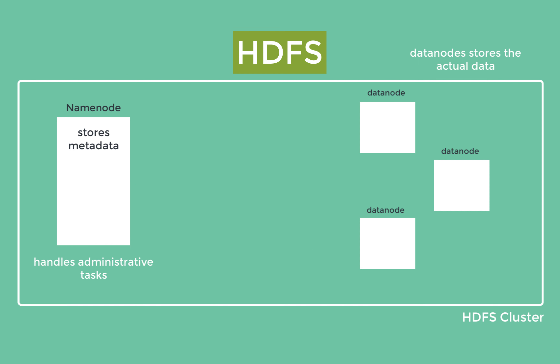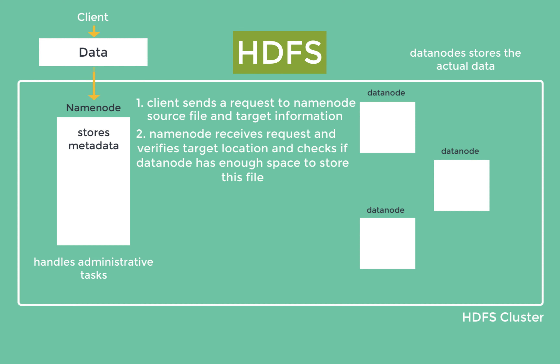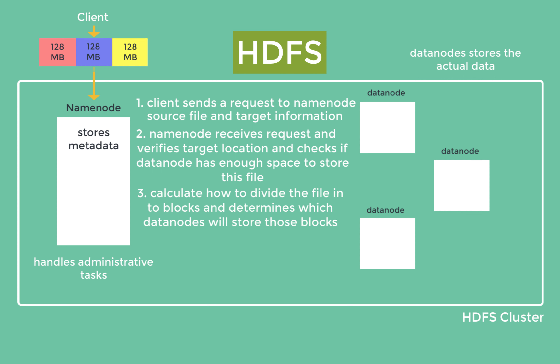Now let's see what happens when we copy a file to HDFS. We can copy a file into HDFS through a number of ways: through the HDFS CLI, HDFS Web UI, and HDFS APIs. When a client wants to copy data into HDFS, the client first sends a request to the NameNode. This request contains information about the source data and the target location in HDFS. The NameNode, acting as the central metadata repository, receives the client request and verifies whether the target location is valid and has enough space to accommodate the data.